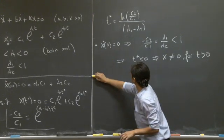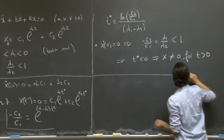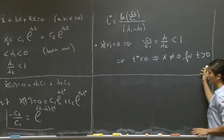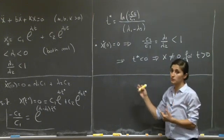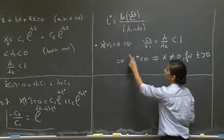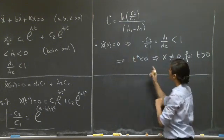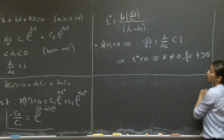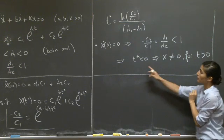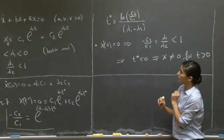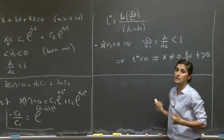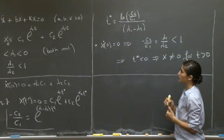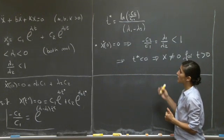That finishes Part 1. Starting from the initial condition x-dot of 0 equals 0, x can never be equal to 0 because the only t-star we can find is negative. So for t greater than 0, the system does not cross the equilibrium point.